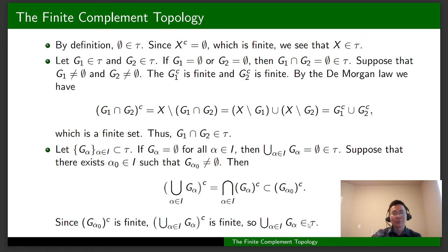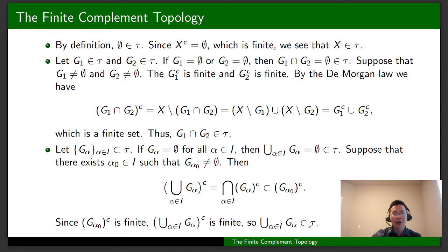Therefore, tau is a topology on X, and X with tau is a topological space. Tau is called the finite complement topology or the co-finite topology on X.